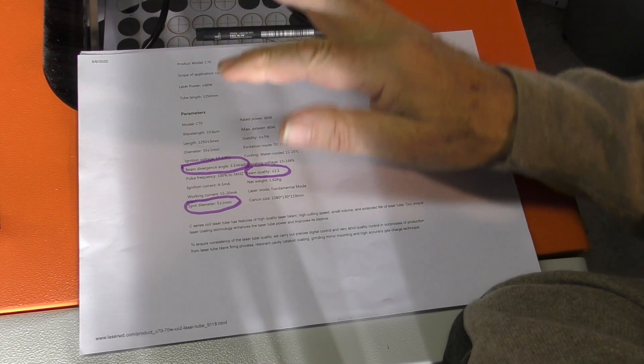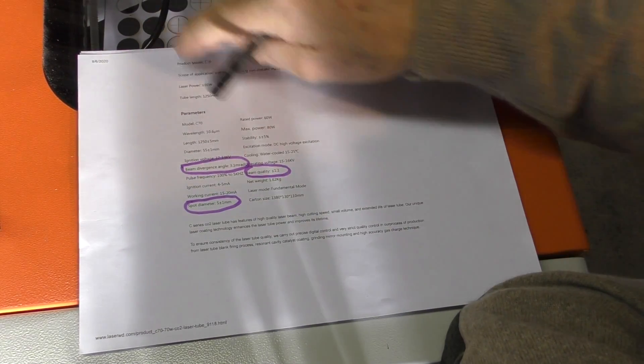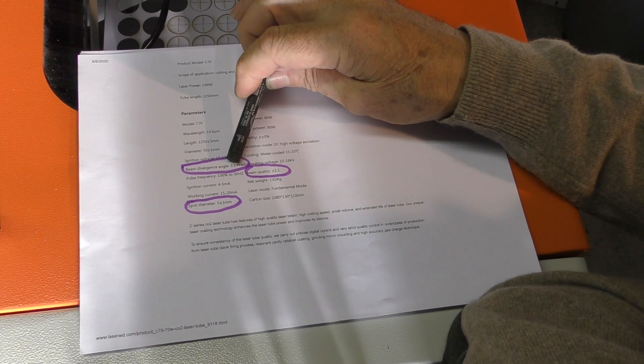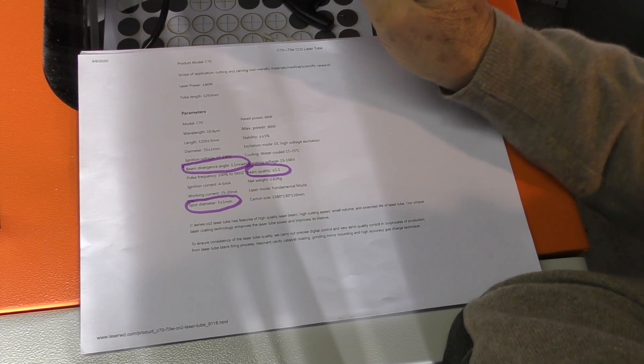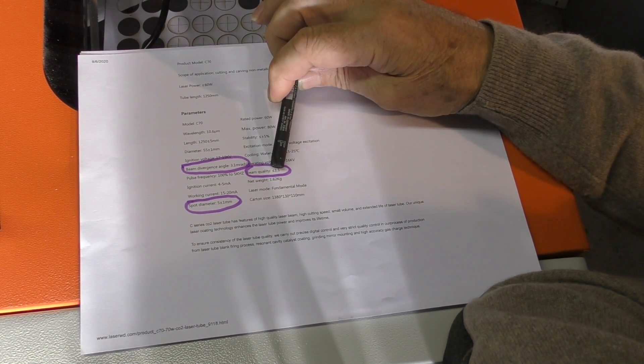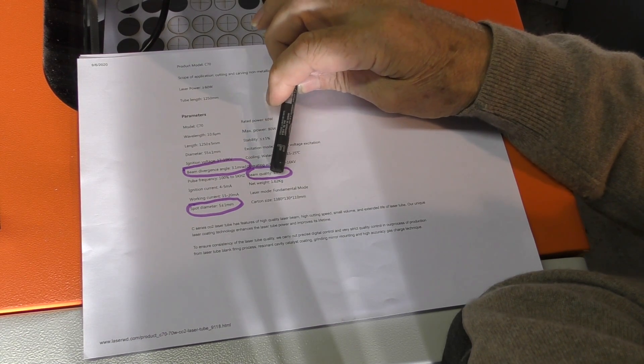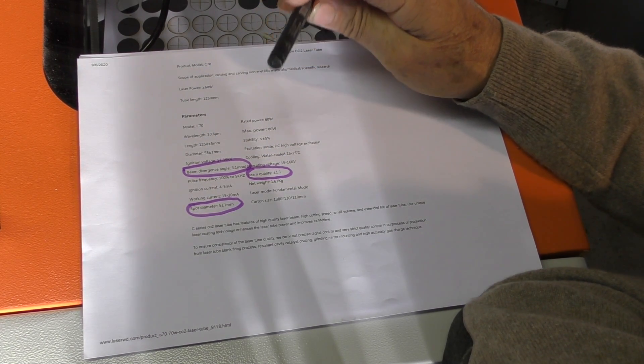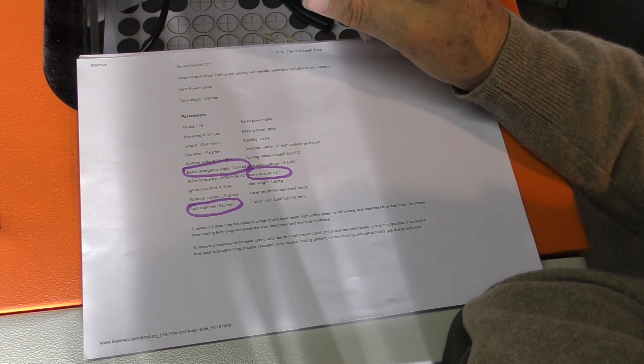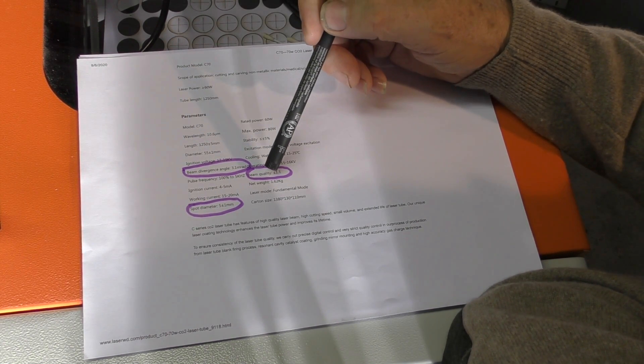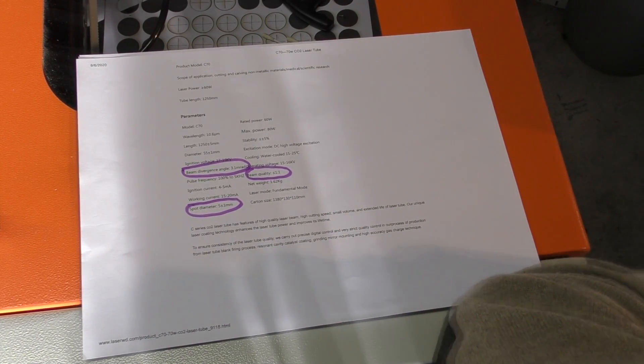I'm not going to go into the maths of what a milliradian is, but let's just say that it is a measurement of the angle of divergence. In other words, the beam is growing but it has an included angle of 3.1 milliradians. It also has a beam quality of less than or equal to 1.1 M squared. This M squared value is basically a definition of the quality of the beam in relation to a true Gaussian distribution. So 1.1 is pretty good.